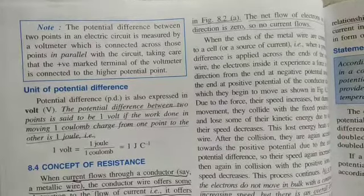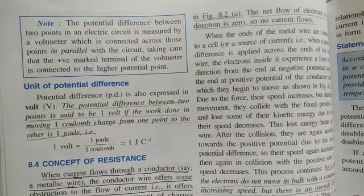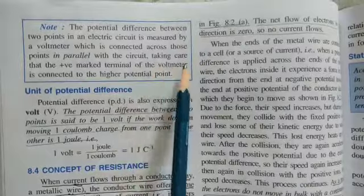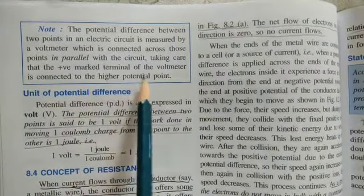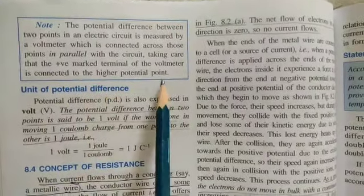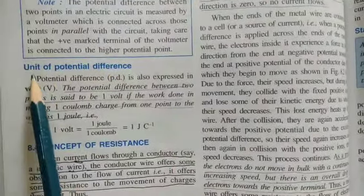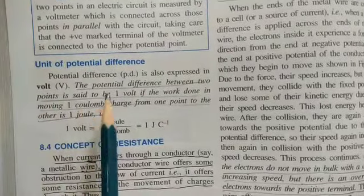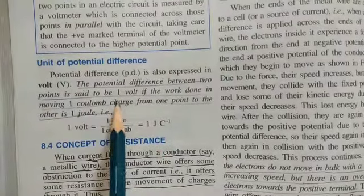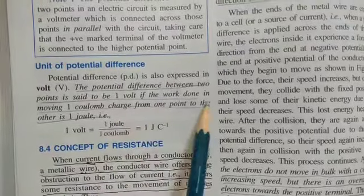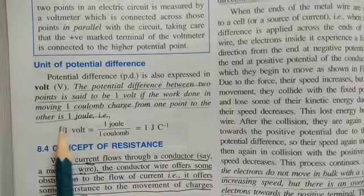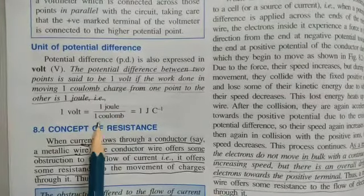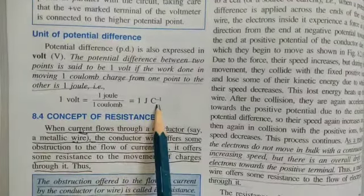The potential difference between two points in an electric circuit is measured by a voltmeter which is connected across those points in parallel with the circuit, taking care that the positive marked terminal of the voltmeter is connected to the higher potential point. Potential difference is also expressed in volt. The potential difference between two points is said to be 1 volt if the work done in moving 1 coulomb charge from one point to the other is 1 joule; that is, 1 volt = 1 joule / 1 coulomb = 1 J·C⁻¹.